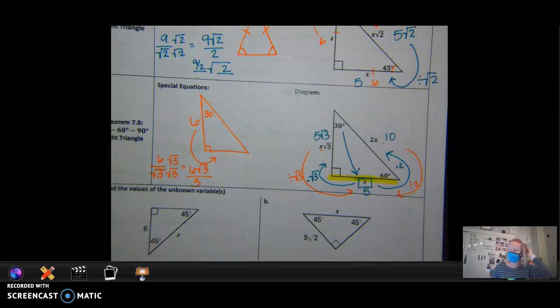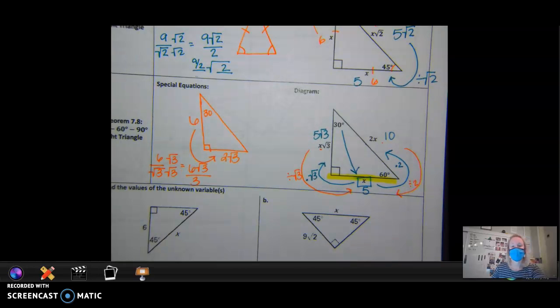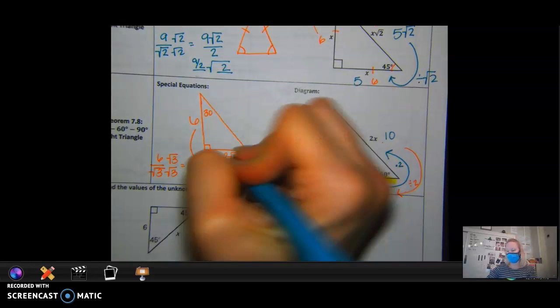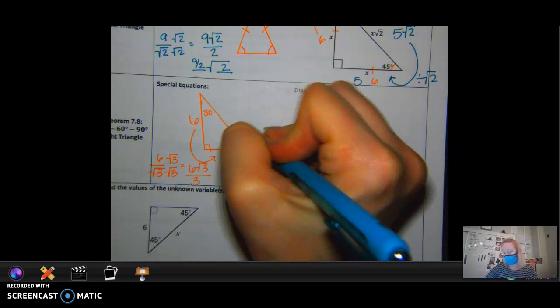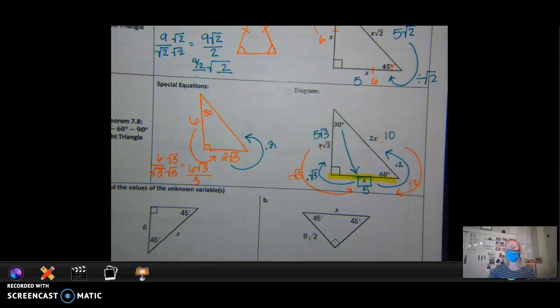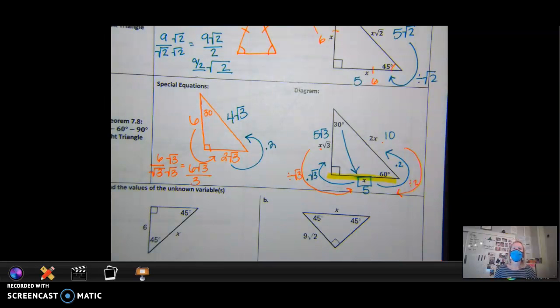Is that my answer? What's my answer? Awesome. Now that I've found that side, I can now find my hypotenuse. By what do I do to that? Multiply it by 2. So it's 2 times the 2 square root of 3. Yep. Are we okay?